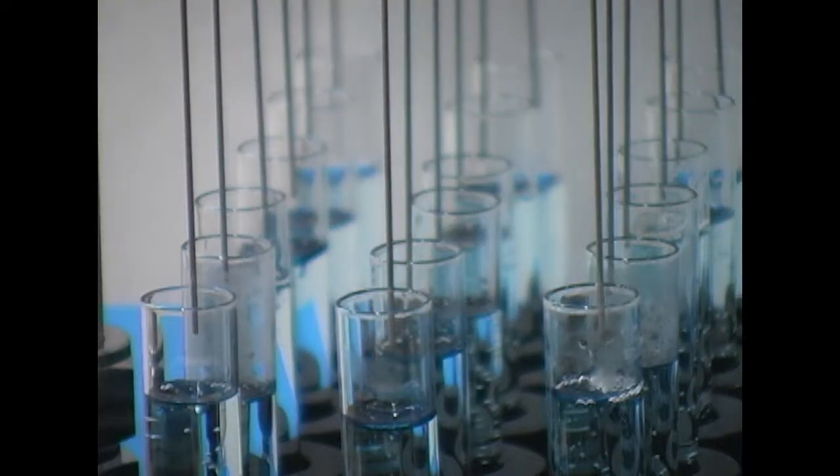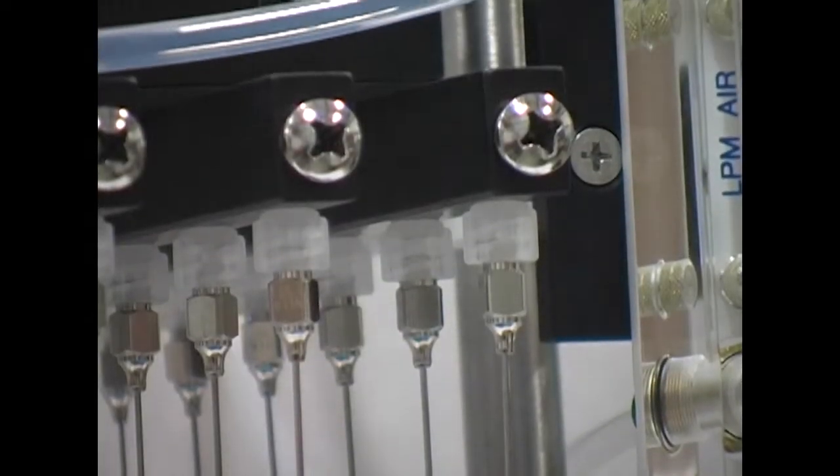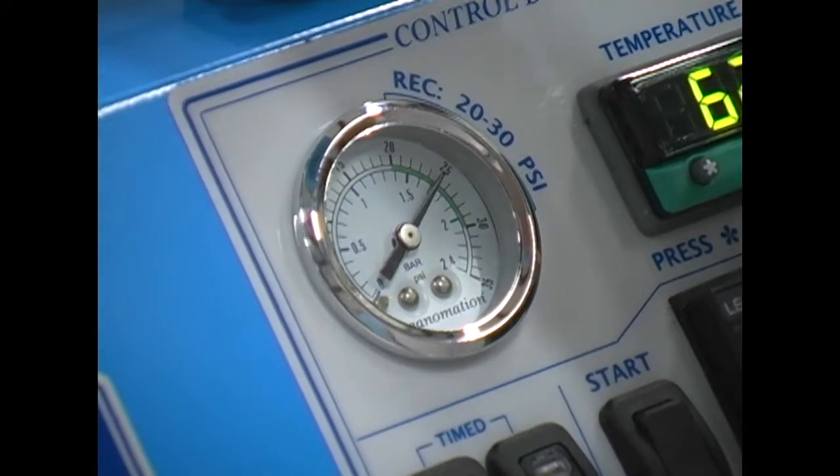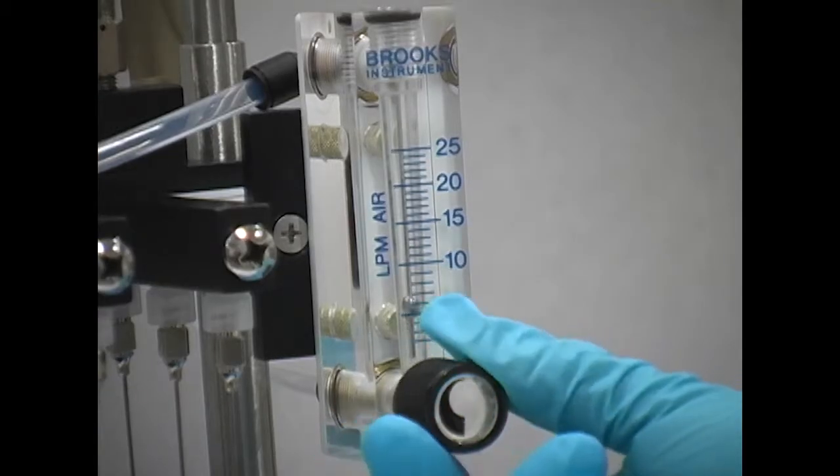Nitrogen gas is delivered to samples through the individual stainless steel needles connected to the hand-built gas distribution manifold. The gas is controlled with the internally installed pressure-reducing gas regulator and adjustable flow meter.